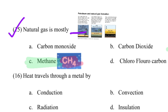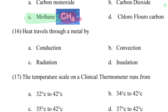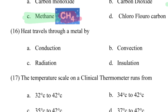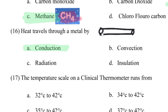The heat travels through a metal by dash. When heat or electricity travels through a metal, that process is called conduction. So option A — conduction — is the correct answer. Heat travels through a metal by conduction.